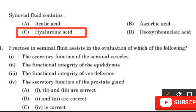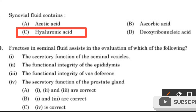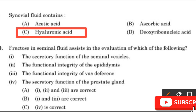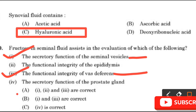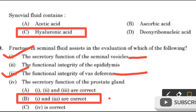Question number 10: Fructose in seminal fluid assists in the evaluation of which of the following — The secretory function of the seminal vesicle, The functional integrity of the epididymis, The functional integrity of the vas deferens, or The secretory function of the prostate gland? Options 1 and 3 are correct. Fructose in seminal fluid assists in the evaluation of the secretory function of the seminal vesicle and the functional integrity of the vas deferens. The right answer is option B: 1 and 3 are correct.